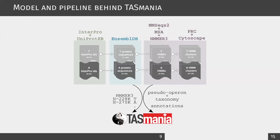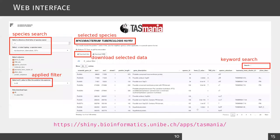Thanks to pseudo-operon annotation, we can also include neighboring X genes alongside the putative TA candidates. In summary, Tasmania contains TA loci based on the starting InterPro identifiers, new TA hits inferred by HMMER3, and X-neighbor genes found by guilt-by-association.